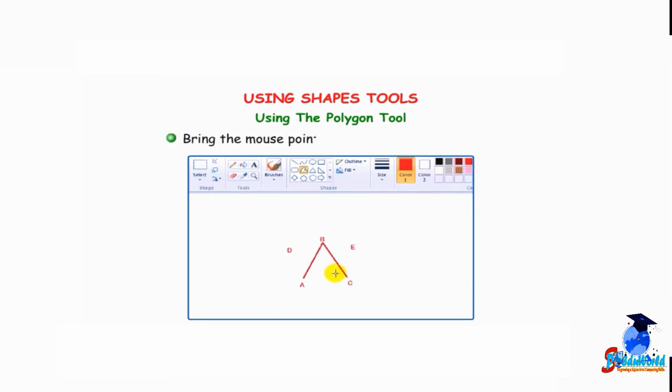Bring the mouse pointer to point D and click once. Further, click the left mouse button at point E. Double-click at the final point A to close the shape.